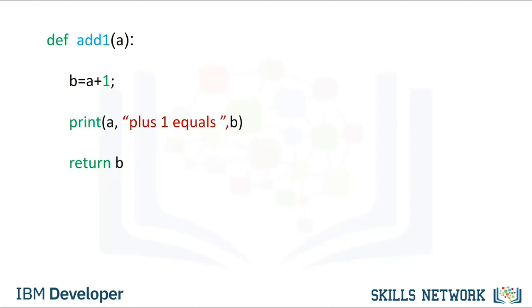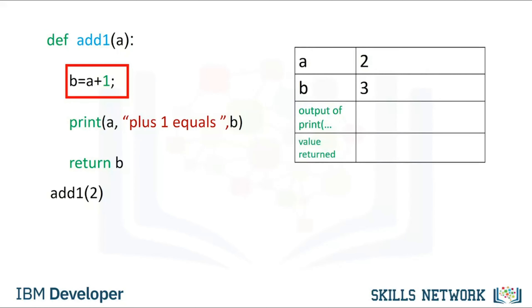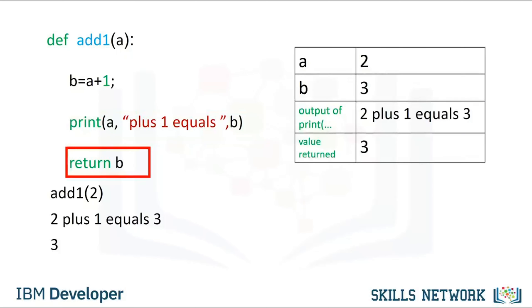Usually, functions perform more than one task. This function prints a statement then returns a value. We call the function with an input of 2. We find the value of b, the function prints the statement with the values of a and b, and finally the function returns the value of b — in this case 3.